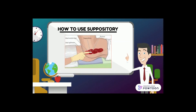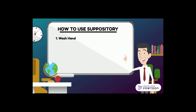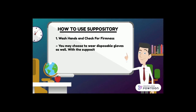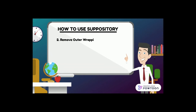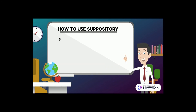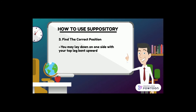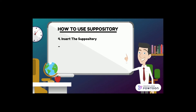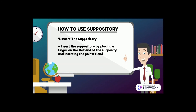How to use a suppository. First, wash hands and check the suppository for firmness — you may choose to wear disposable gloves. With the suppository still in the outer packaging, squeeze it lightly. Second, remove the outer wrapping — rectal suppositories come in an outer plastic wrapping, so always remember to remove it before use. Third, find the correct position: lay down on one side with your top leg bent upward toward your stomach, or stand with one leg bent on a chair. Fourth, insert the suppository by placing a finger on the flat end and inserting the pointed end into the rectum.